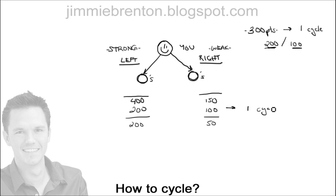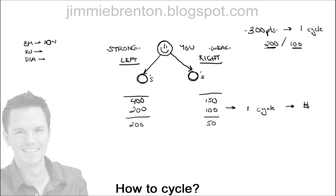It's going to try again — 200 from the strong side, which it can do — but you don't have enough points on your right side to take away the full 100, so it stops and totals up the cycles, which is once in this case. Now, looking at the ranks: Emerald gets paid $14 per cycle, Ruby is $16, and Diamond is $18 per cycle. So in this particular example, you cycled once and get a grand total of $14 for your team cycling that week.